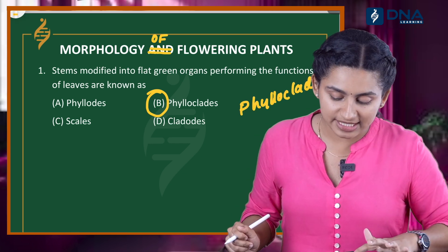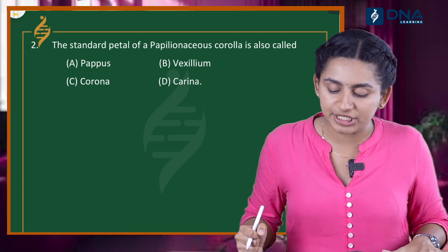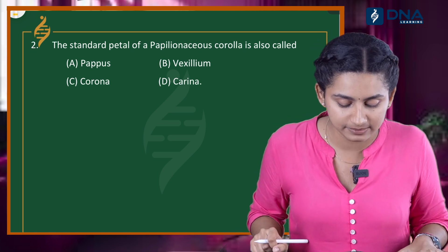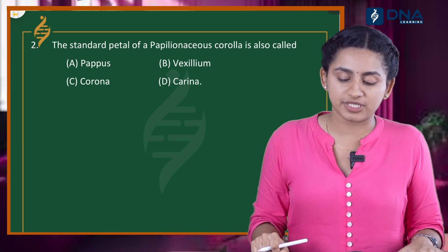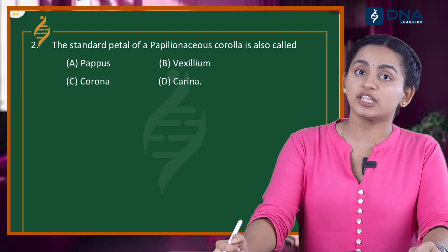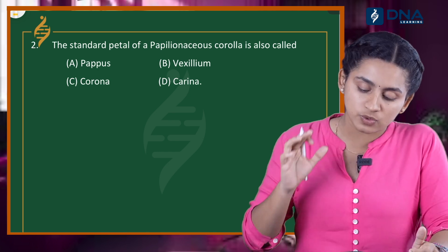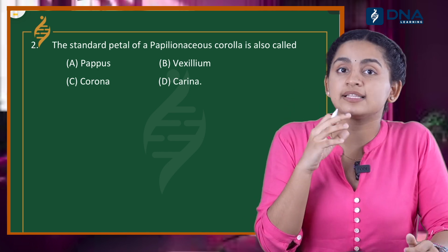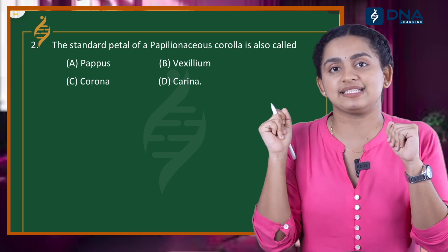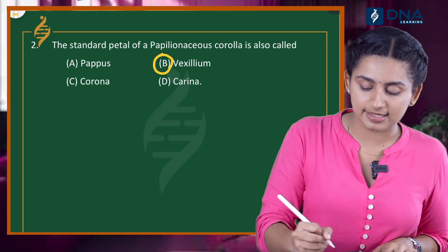So, let's start with question number 2. The standard petal of a papilionaceous corolla is also called. Option A: pappus. Option B: vexillum. Option C: corona. Option D: karina. Papilionaceous corolla is the butterfly-shaped flower found in legume family. The irregularly butterfly-shaped large petals are called vexillum. So, our correct answer is Option B, vexillum.